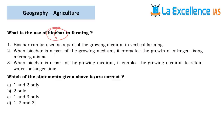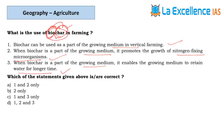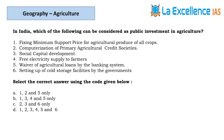The next question is about biochar. The name itself shares the clue — char means charcoal. Biochar is charcoal produced from biomass without using oxygen. Statement 1 — biochar can be used as part of growing medium in vertical farming; yes, good for soil. Statement 2 — promotes growth of nitrogen-fixing microorganisms; yes, produced from biomass. Statement 3 — enables growing medium to retain water longer; yes, organic nature. All three statements are right; answer is D.